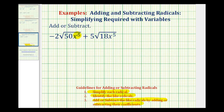For the square root of 50x to the fifth, if we recognize that 25 is a perfect square factor of 50 and 9 is a perfect square factor of 18, this can save us some time. But we can also list the prime factorizations to help determine the perfect square factors, which is what we'll do here.